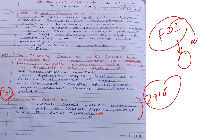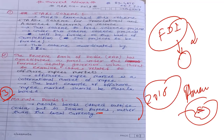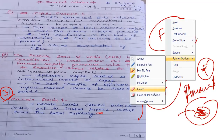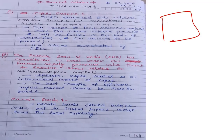Masala bonds allow international investors — for example, from America or Sri Lanka — to invest in India, but they must pay in rupees, not dollars. Anyone internationally can buy these bonds, similar to foreign direct investment, but the denomination is in Indian rupees.